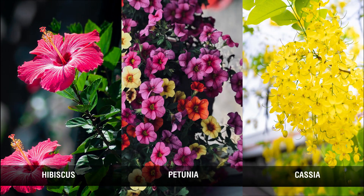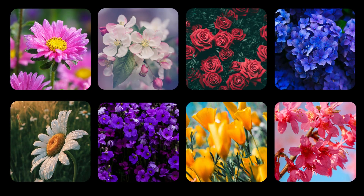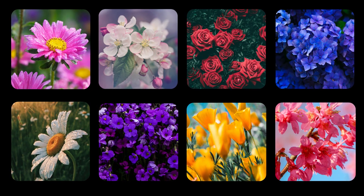Conclusion: We studied some flowers that contain both male and female parts in a single flower, such as petunia, hibiscus, and cassia — these are called bisexual flowers. Flowers which contain either male or female parts in a single flower, such as bitter gourd flower and papaya flower, are unisexual flowers. There are many such flowers in this category and you can find them in your surroundings.